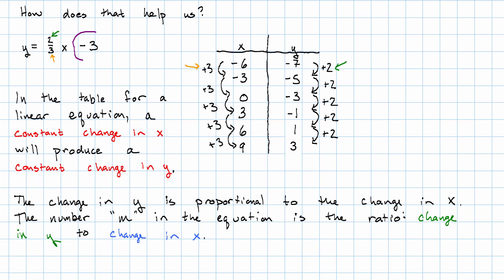The number m in the equation is the ratio of the change in y to the change in x. What about the number b? Well, we see that in the table, too. The number b in the equation is the value of y when x is zero.